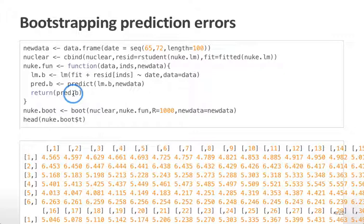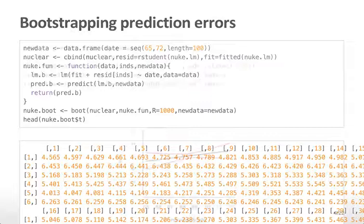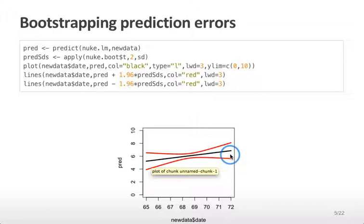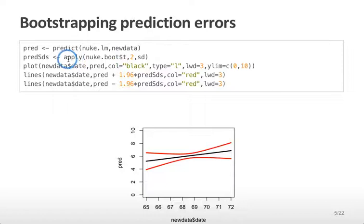If we look at the test statistic that comes out of this bootstrap sample, we get 1,000 replications for each of the 100 values from 65 to 72. We plot the fitted values in black — the predicted values from our original linear model object on the new data values. We then calculate the standard deviations of the test statistics for each of those 100 values. There are 100 columns, one per new data value, each predicted 1,000 bootstrap times, so we can calculate the standard deviation of those predictions for each value.